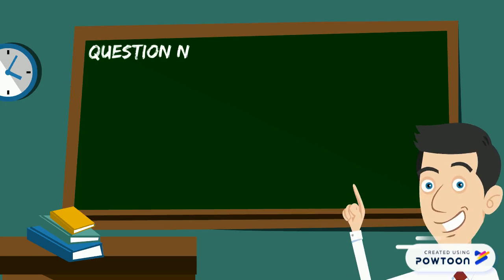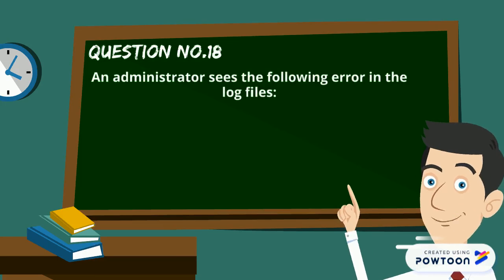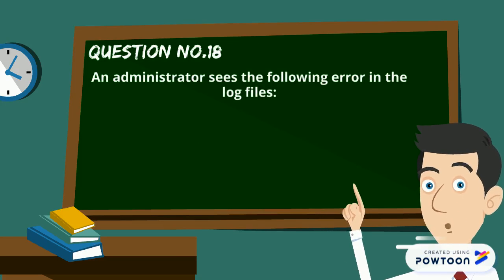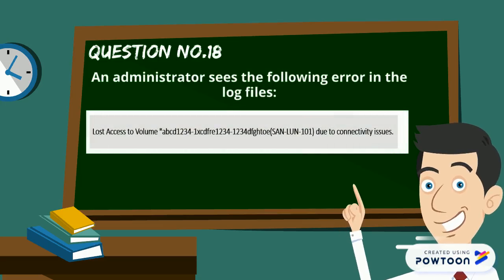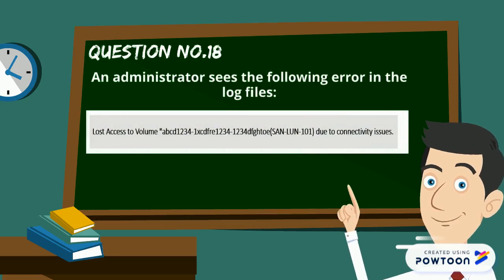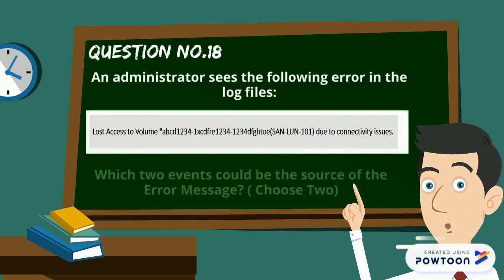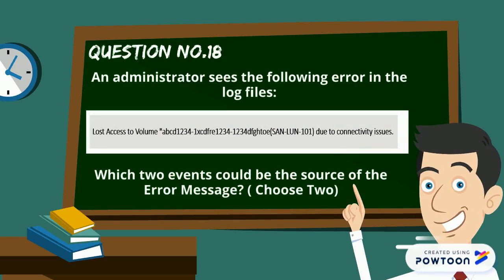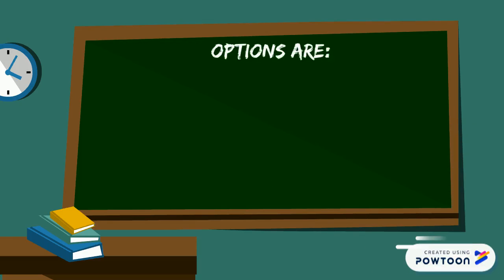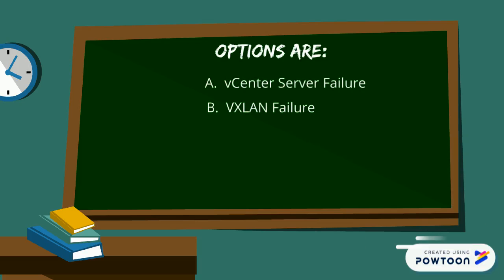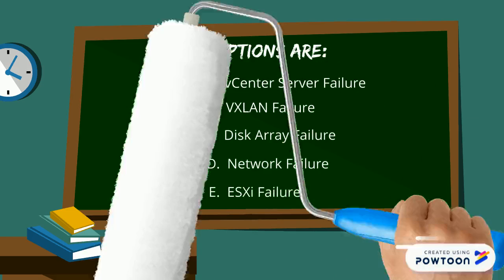Here goes question number 18. An administrator sees the following error in the log files: 'Lost access to volume SAN LUN 101 due to connectivity issues.' Which two events could be the source of the error message? Choose two. Options are: a) vCenter server failure, b) vxLAN failure, c) disk array failure, d) network failure, e) ESXi failure.